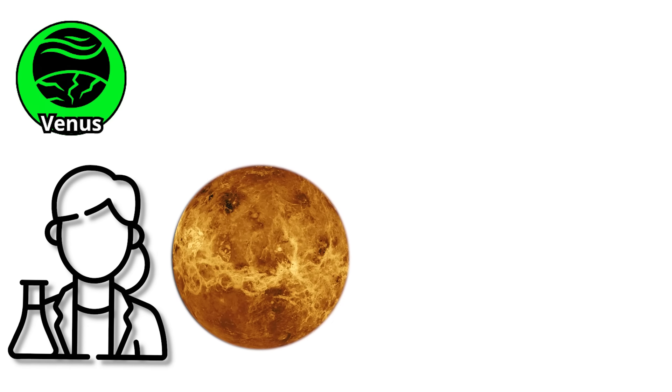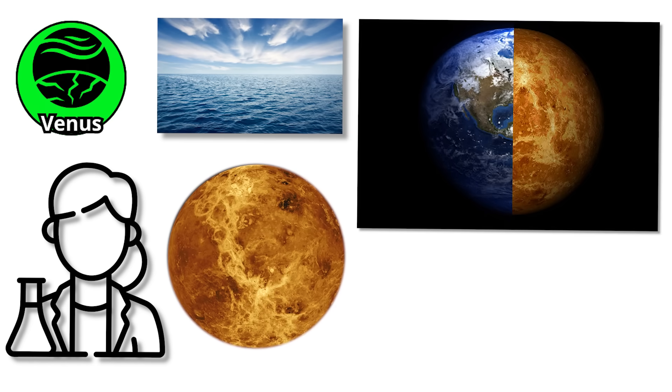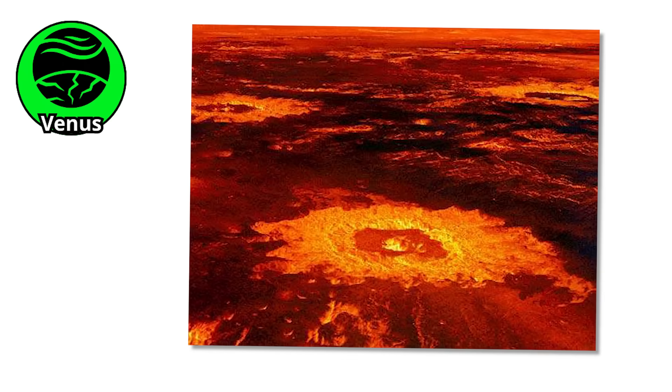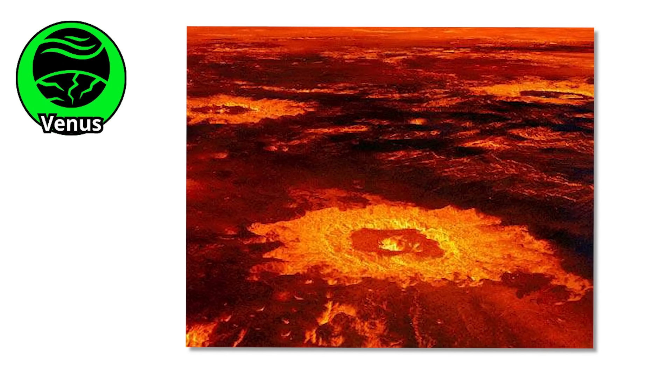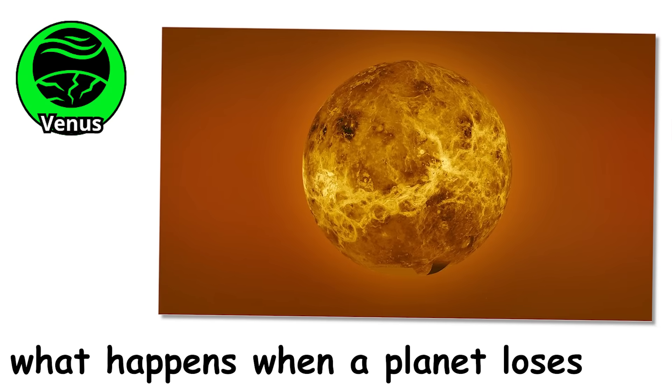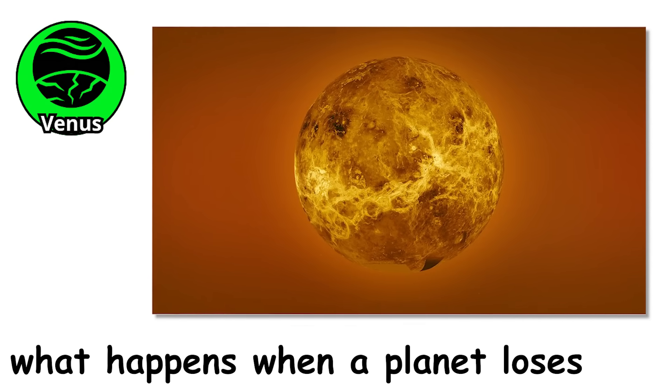Scientists think Venus might once have been more Earth-like, possibly with oceans and a mild climate. But something went terribly wrong. A runaway greenhouse effect trapped more and more heat until the oceans boiled away and the surface became a furnace. Today it stands as a warning of what happens when a planet loses control of its climate.